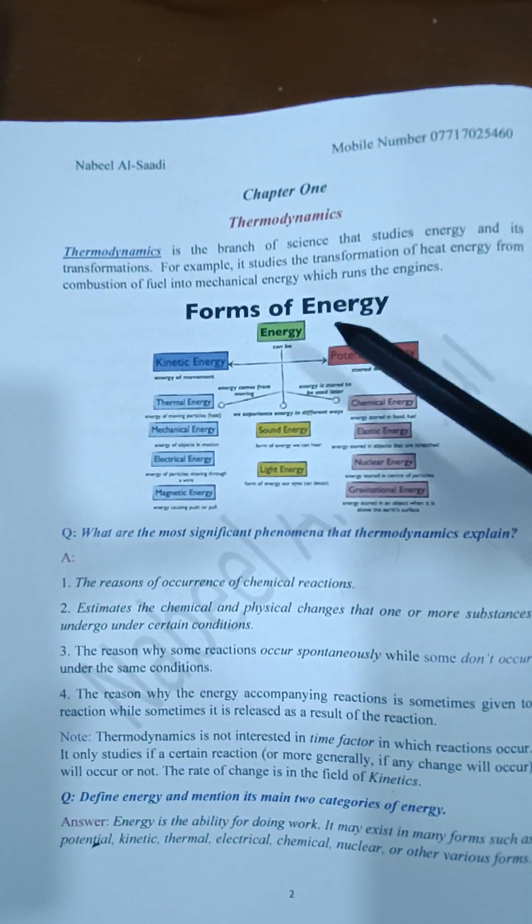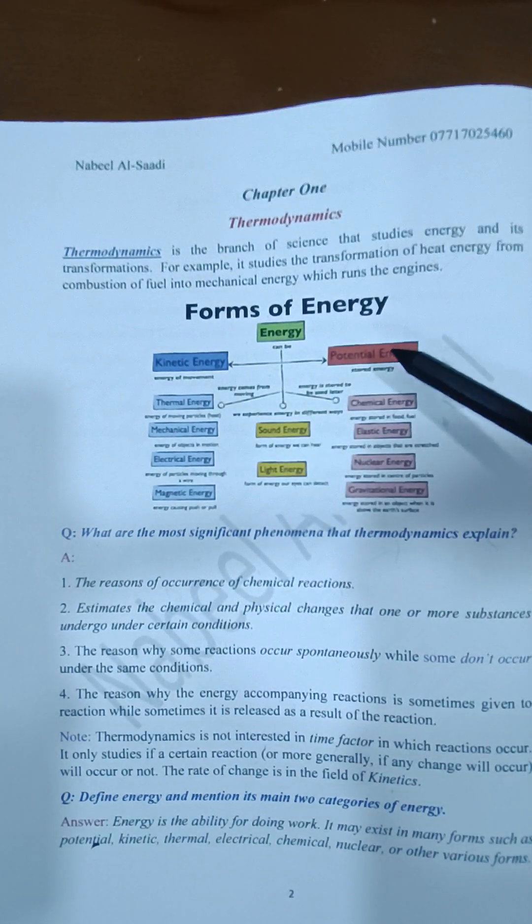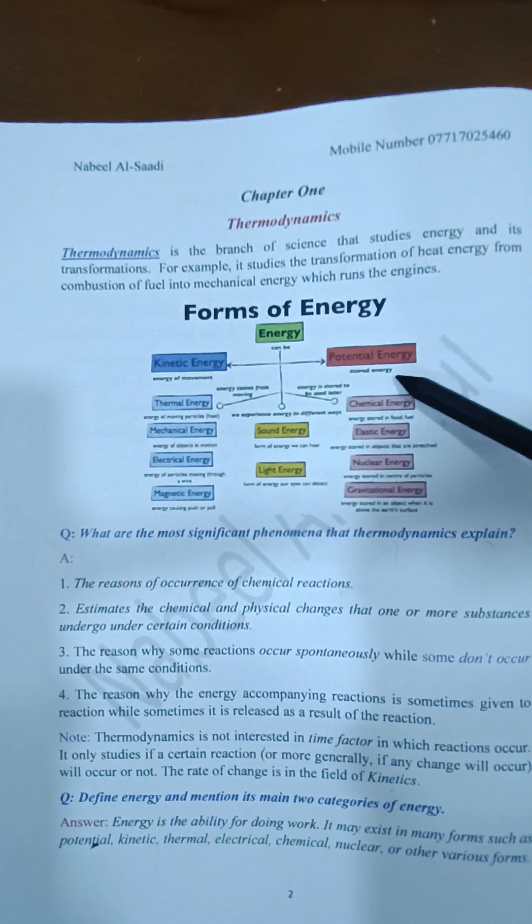Energy can be found in various forms in nature, such as kinetic energy, which is the energy of movement, and potential energy, which is stored energy.